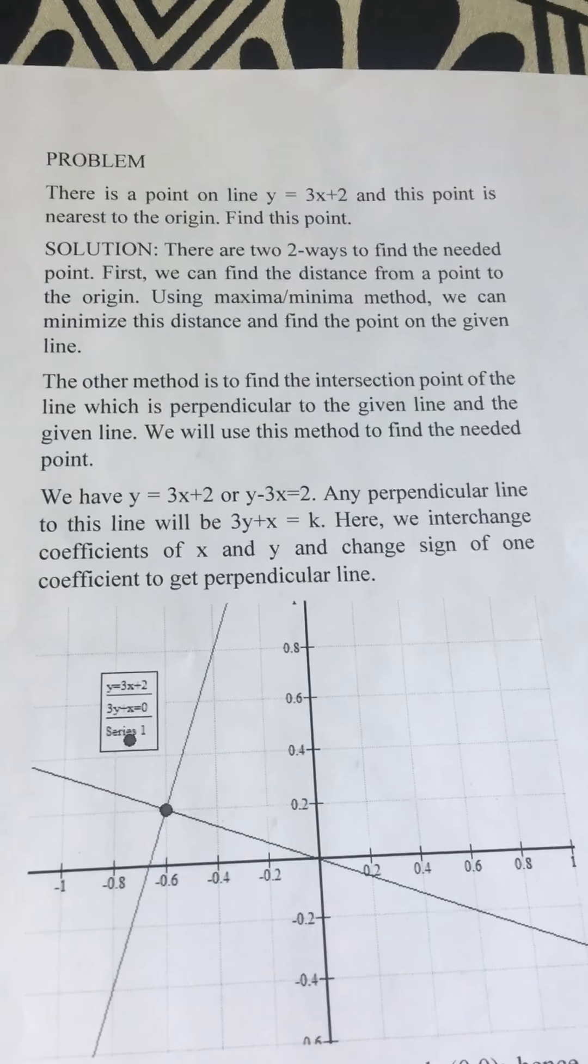Substituting y = 3x + 2, we get 3(3x + 2) + x = 0, or 9x + 6 + x = 0, or 10x = -6, or x = -6/10 = -3/5.